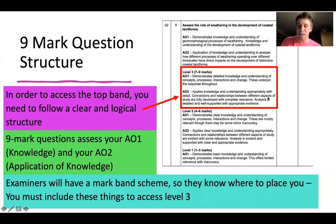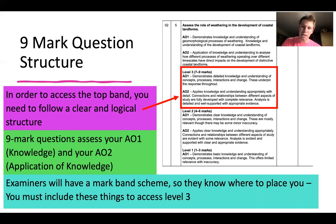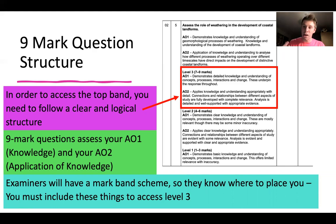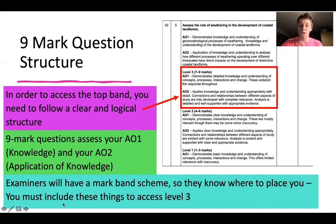With AO2, you apply knowledge and understanding with detail, making connections and relationships between different aspects of study — that's the synoptic links. That's the idea of linking things such as climate change affecting coastal landscapes, or how changes within a city make different groups feel — insiders versus outsiders when considering changing places. It has to be supported throughout; you can't just do it once.